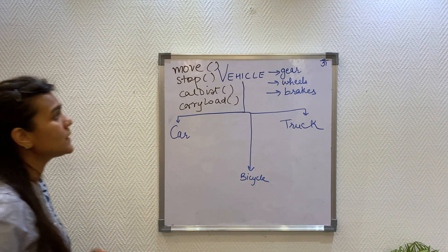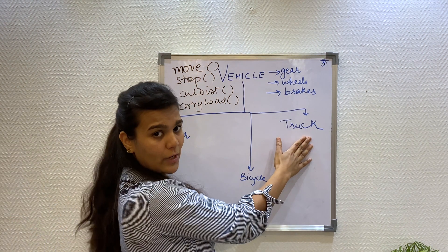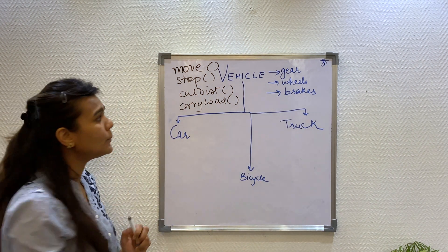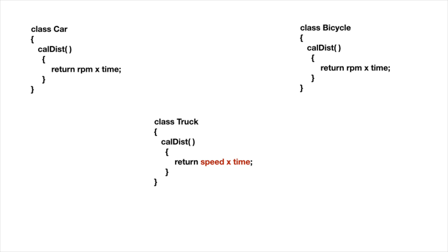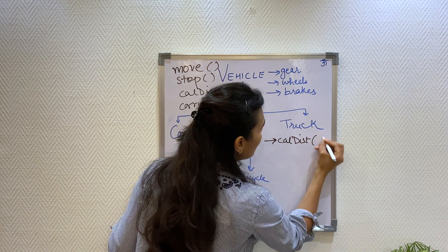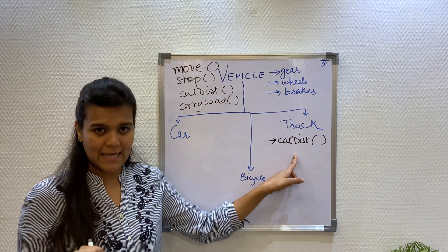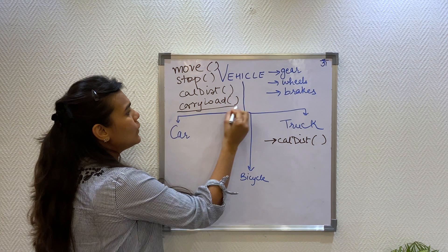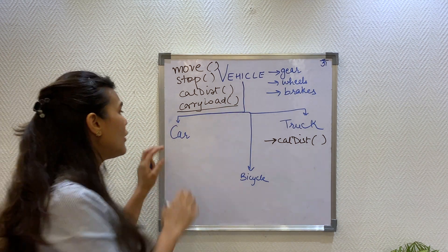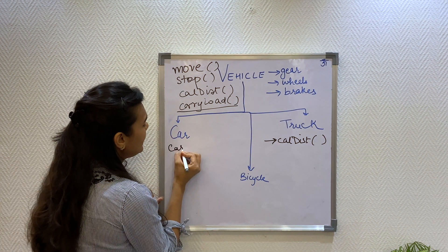The move and stop behaviors will be the same for a car, for a bicycle and for a truck. But calculate distance had a different implementation in the truck class while it had the same implementation in the car and the bicycle class. So I will write the calculate distance method in my truck class having its own implementation of speed multiplied by time, instead of rotations per minute and time. Also, the carry load method will have its own implementation for each of these classes — car, bicycle or truck.